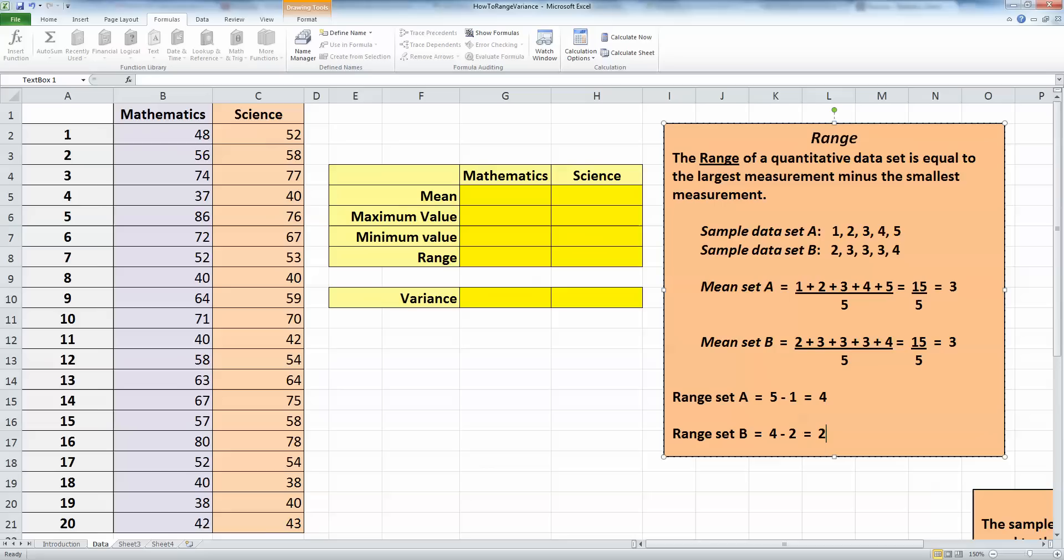So now let's go over to our maths tests and science. These are sample test scores over here on the left hand side in columns B and in column C. And I first of all want to calculate the mean for each of these. I don't need this for either the range or the variance, but it's good to see what the mean is when you're looking at variability.